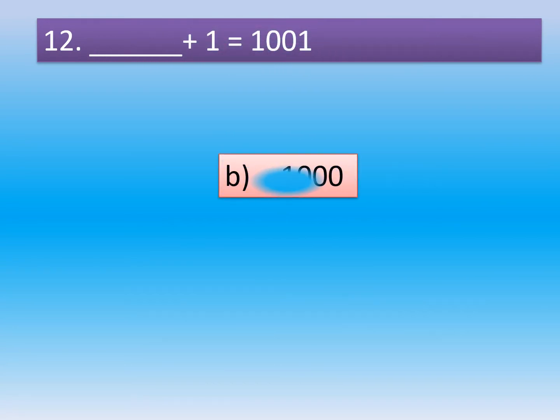The correct option is Option B: 1000. Dash plus 1 is equal to 1001.